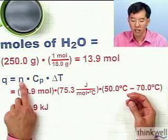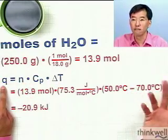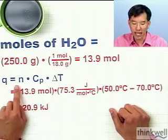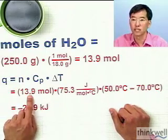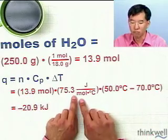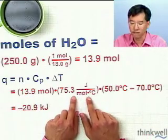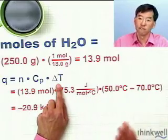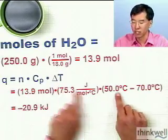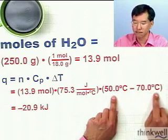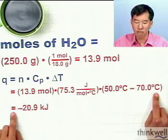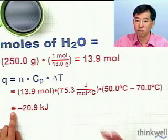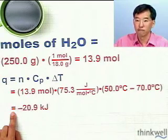The things that relate these two quantities to the heat evolved or absorbed is the molar heat capacity. So we can plug in. We have that the number of moles is 13.9, and the molar heat capacity of water is 75.3 joules per mole degree Celsius. And the change in temperature, which is final temperature minus initial temperature, 50 degrees Celsius minus 70 degrees Celsius.